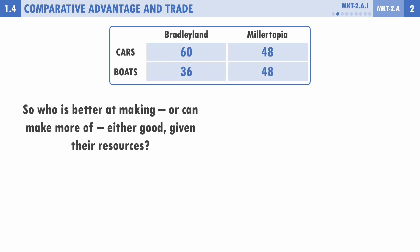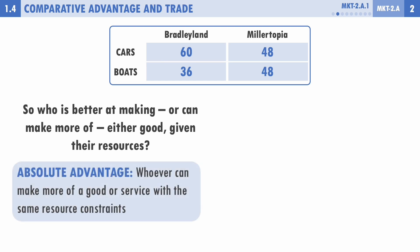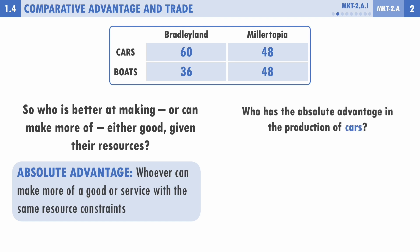Looking at this table, we can ask who is better at making either good — this is asking about absolute advantage, which is simply who can make more of a good or service within the same resource constraints. Who has the absolute advantage in cars? We're asking who can produce more cars. That's Bradley Land, because 60 cars is greater than Millertopia's 48 cars.